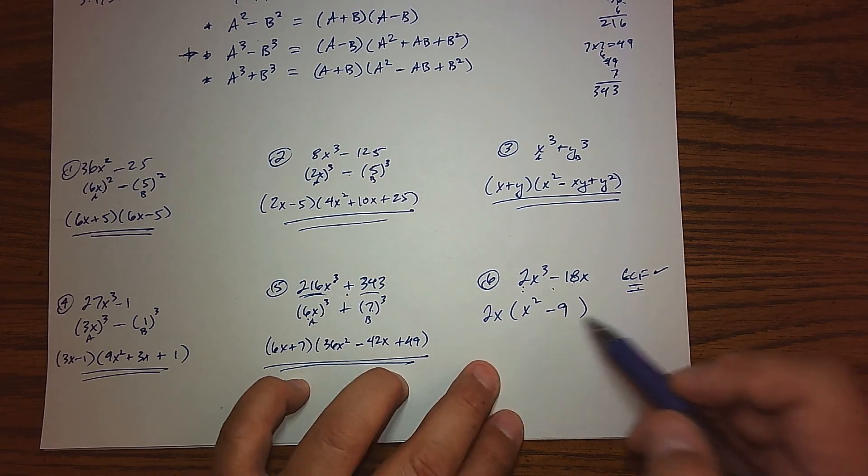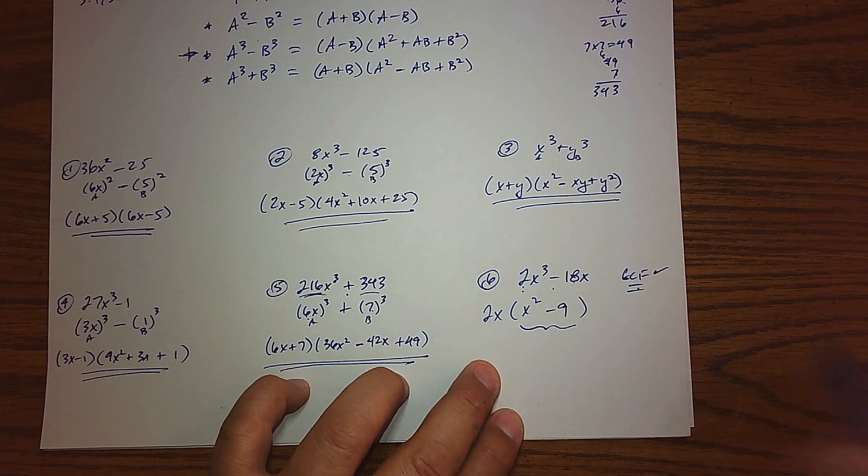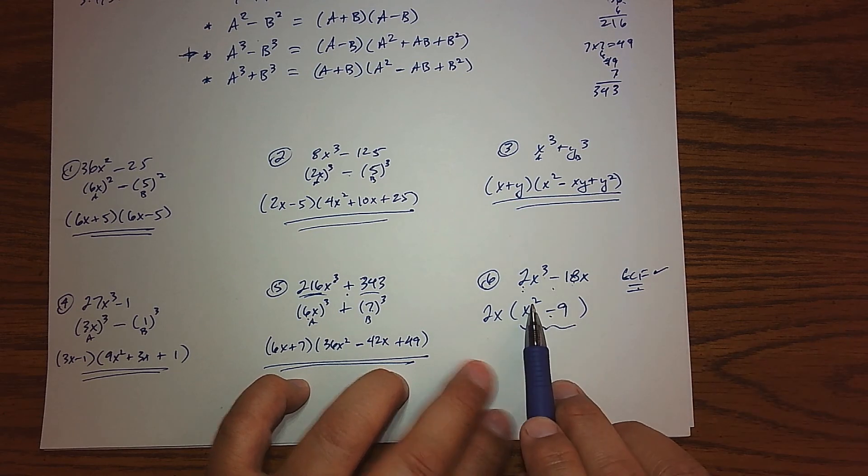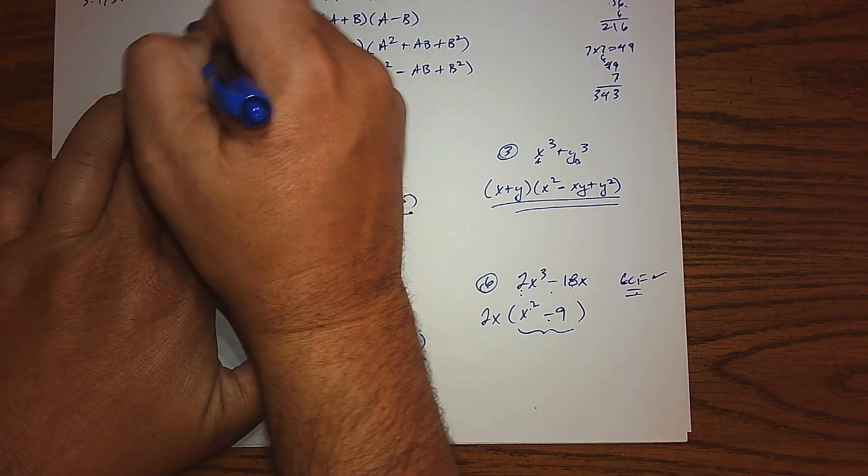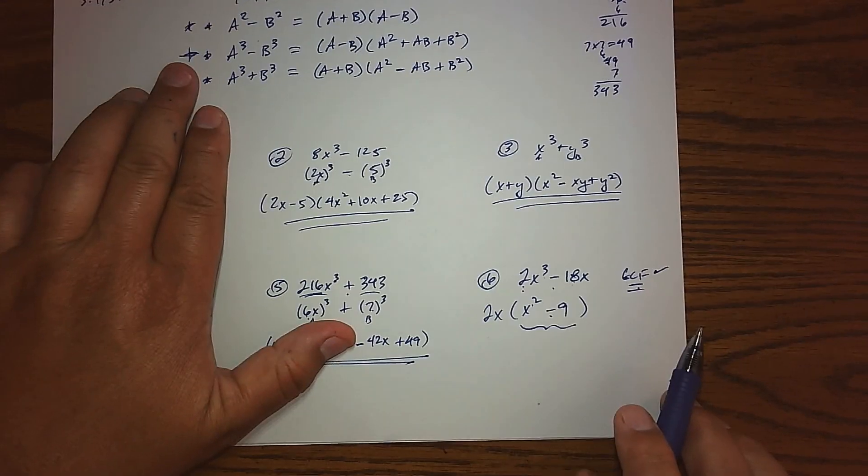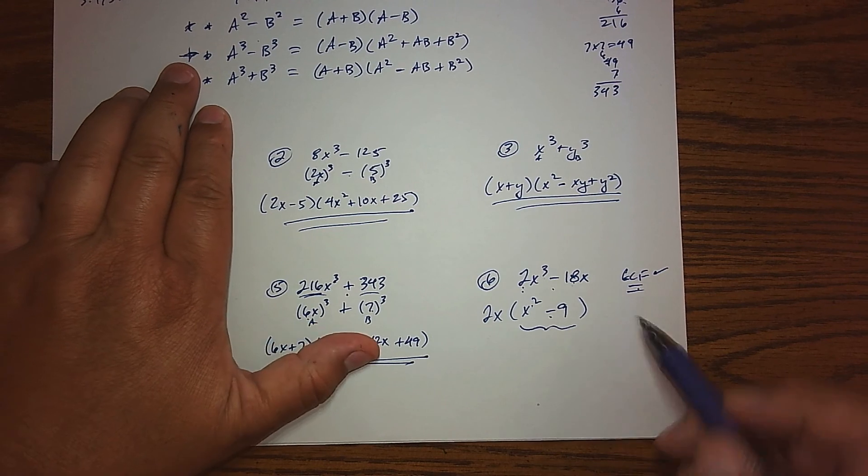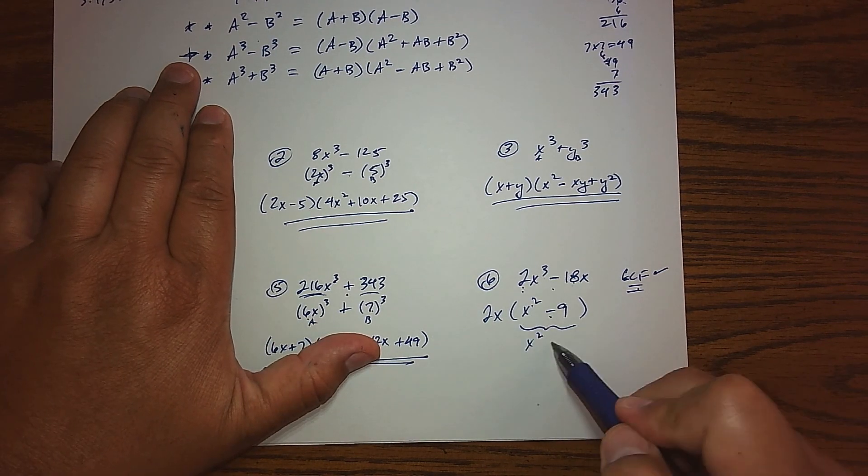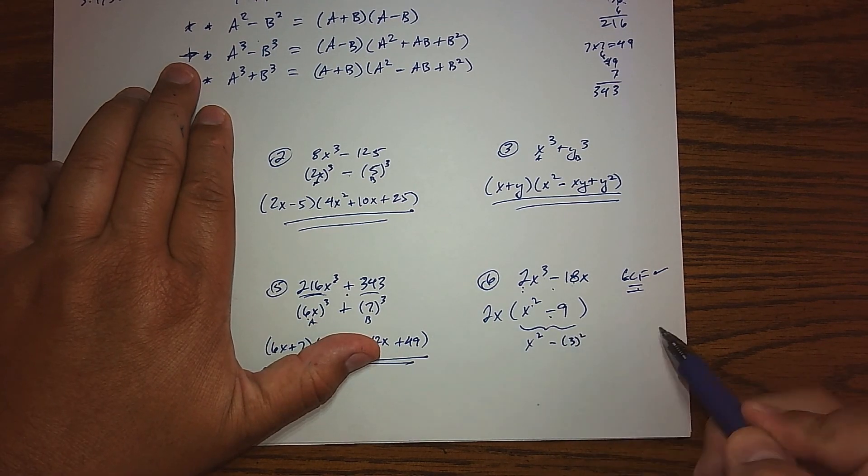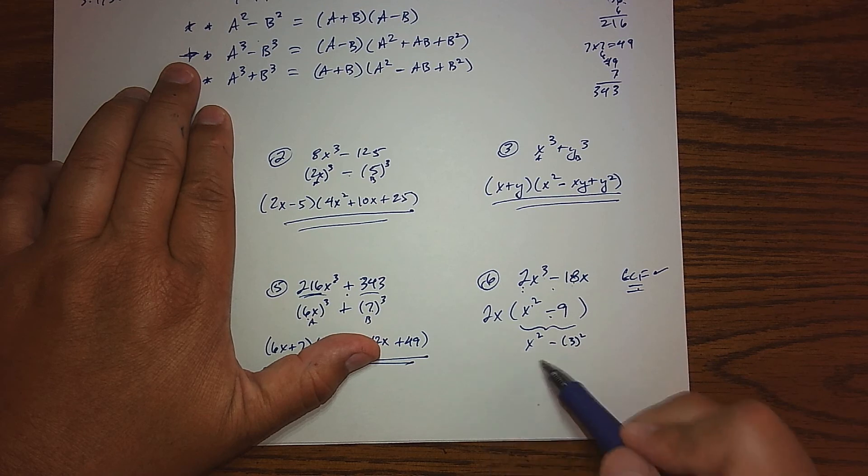And now what you'll notice is if you take a look at this binomial that's left, it is a difference and a square, and so now we're thinking, well, what's left looks like the difference of squares to me. Of course, x is x², and 9 is 3², so yeah, that's a difference of squares.